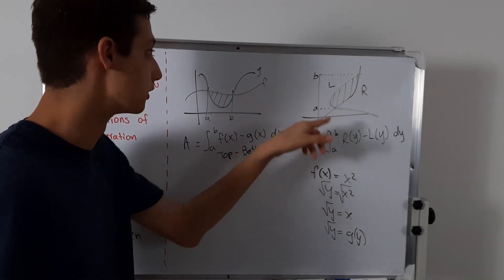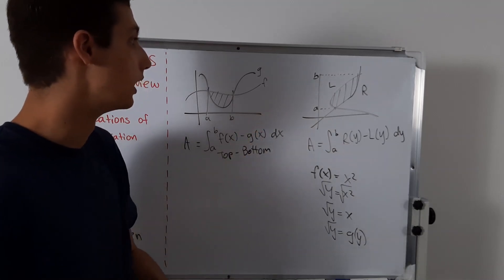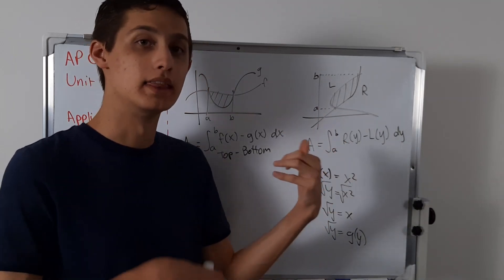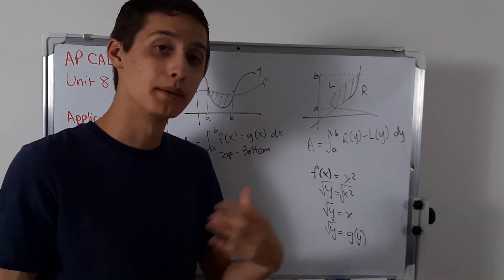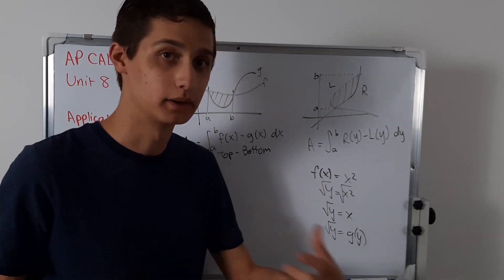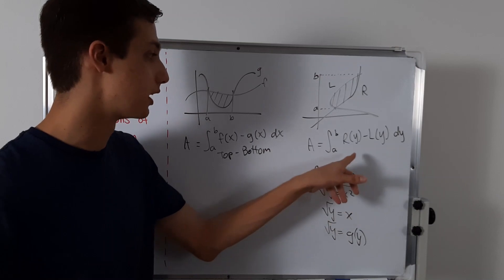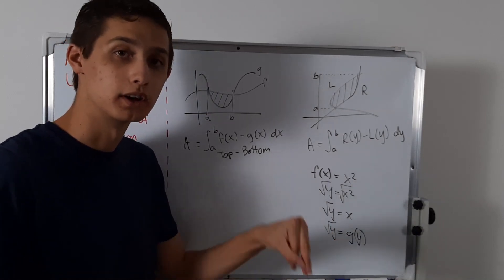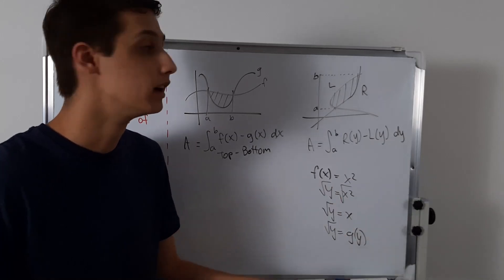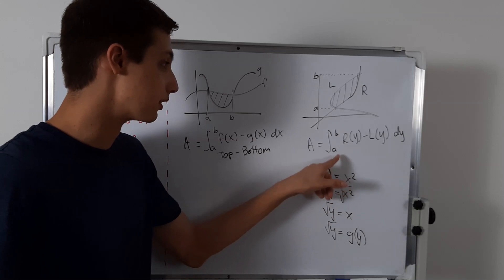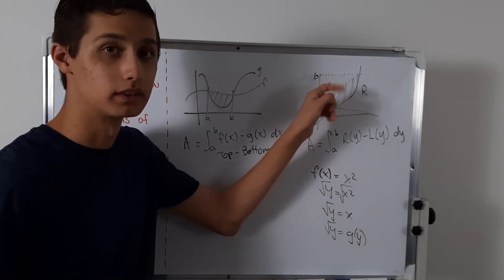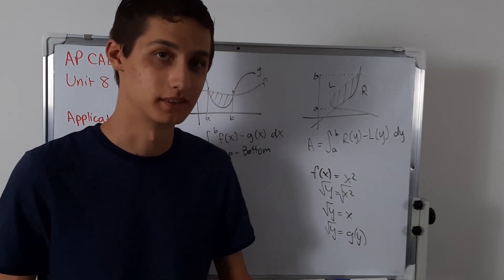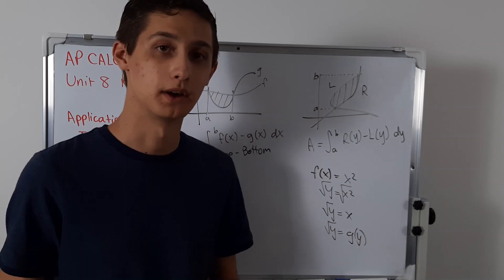So it's either x only or y only — either top minus bottom, or right minus left. It's typically better to convert to functions of x to graph them, then convert back to functions of y. If they give you y equals something and you realize you need to do right minus left, graph it as a y-equals function, then convert the formula into terms of y. Make sure your endpoints are also y-coordinates.